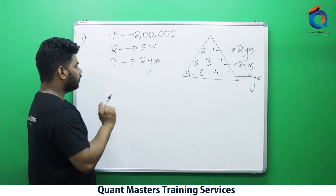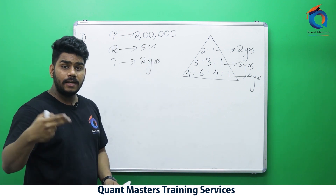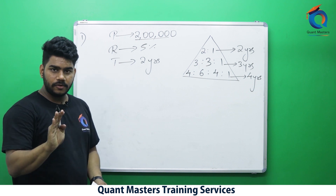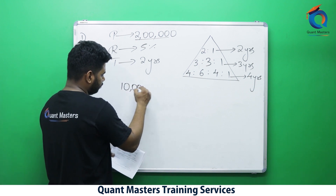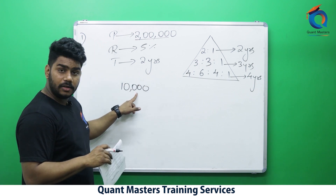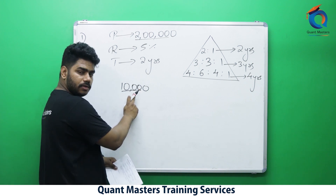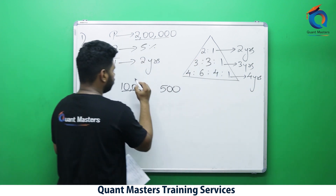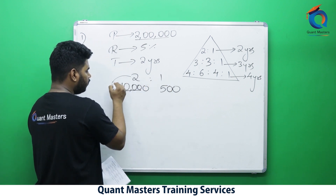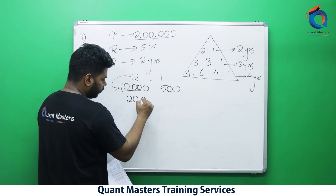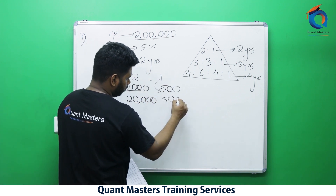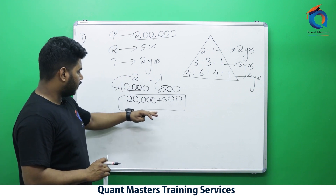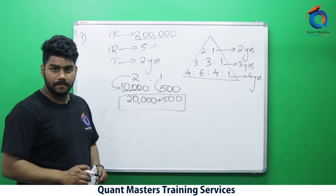Method four: rate is 5% for two years, so calculate two times. 10% of 2,00,000 is 20,000, so 5% is 10,000. Second calculation: 10% of 10,000 is 1,000, so 5% is 500. Use the ratio 2:1. 2 × 10,000 = 20,000 and 1 × 500 = 500. Total interest = 20,500 rupees — same answer, faster and easier.